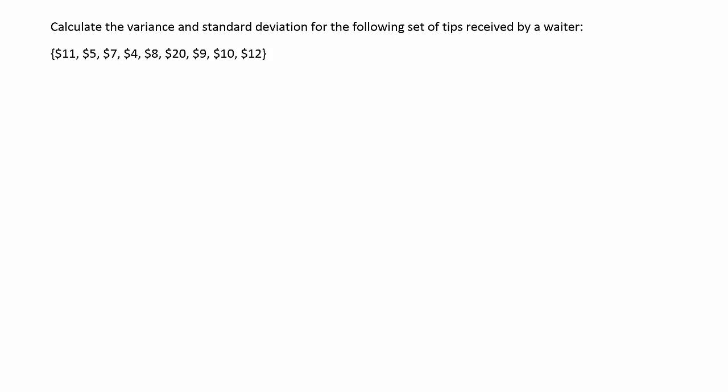Okay, so first step is going to be to create a column called x which is where you'll put all your data. So I'm just going to write the numbers down ignoring the units now. I'll know that the units are in dollars, right? So I'll just write down the numbers without those units. 11, 5, 7, 4, 8, 20, 9, 10, and 12.